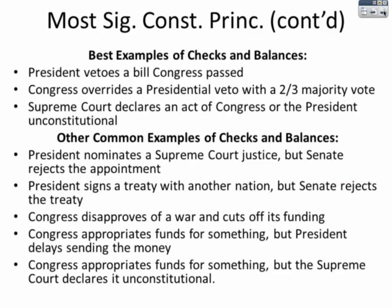Some of the best examples of checks and balances: a President can veto a bill passed by Congress, but Congress can override that Presidential veto with a two-thirds majority vote. The Supreme Court can declare an act of Congress or the President unconstitutional. The President can nominate a Supreme Court Justice, but the Senate could reject the appointment. The President can sign a treaty, but the Senate can reject it. Congress can disapprove of a war and cut off its funding. Congress can appropriate funds, but the President could delay sending the money, or the Supreme Court could declare it unconstitutional.